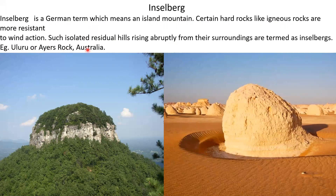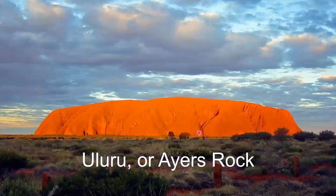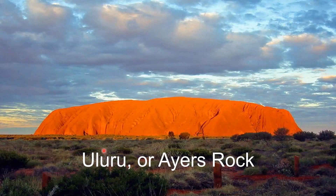An example is Uluru, or Ayers Rock, in Australia. When different types of rocks are found in an area, the igneous rocks, being more resistant to wind action, erode very slowly while the surrounding rocks are worn out, resulting in the formation of an inselberg. Uluru, the aboriginal name of Ayers Rock, is believed to have formed around 450 to 500 million years ago, and Uluru means single or large pebble.